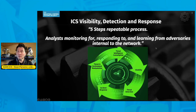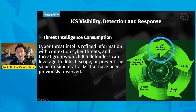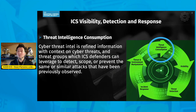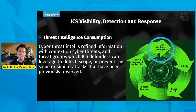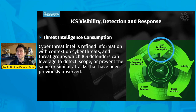The active cyber defense cycle does have a first place we start, which is usually the threat intelligence consumption phase. This refers to cyber threat intelligence — refined information with context of the cyber threats and adversary groups targeting our industrial control system environments across all sectors in the ICS. It's important to note that the ACDC cycle can be deployed in all industrial control environments across all sectors.